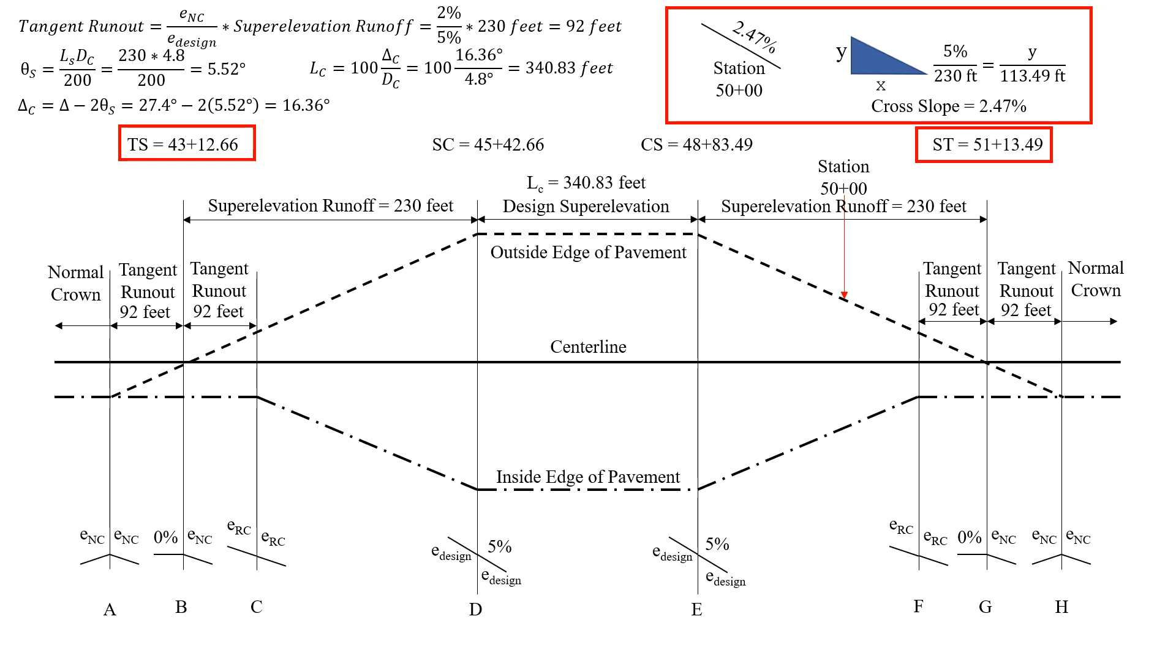And that's the answer to this second part, 2.47% all sloped for both the inside and outside lanes.